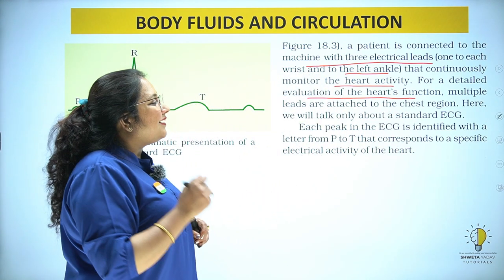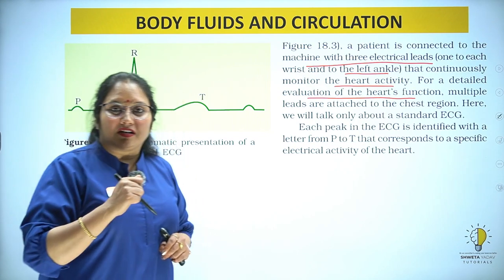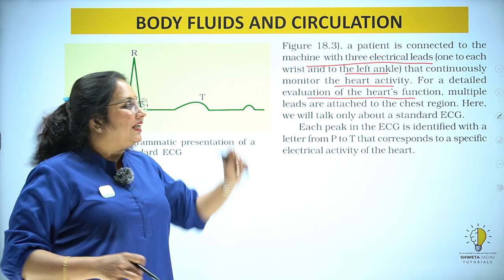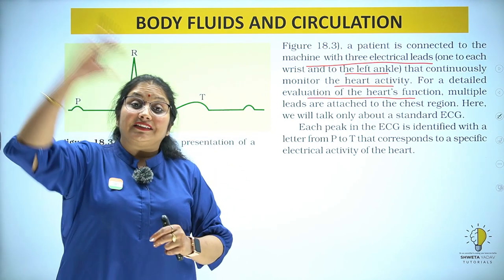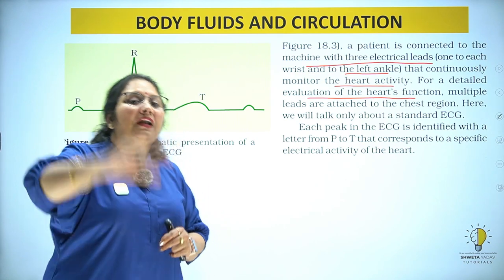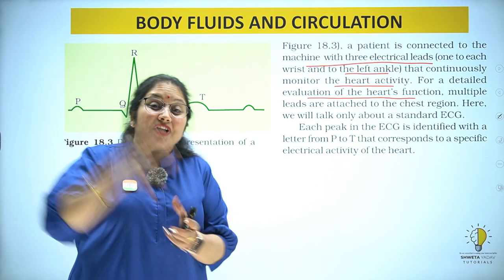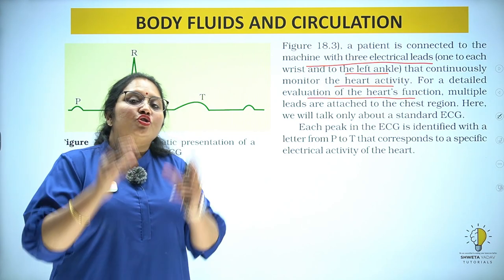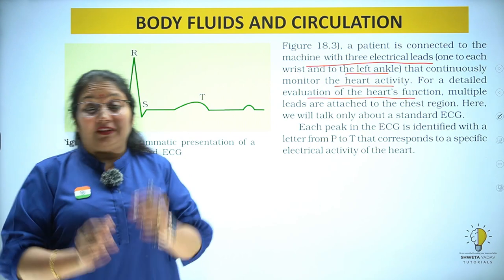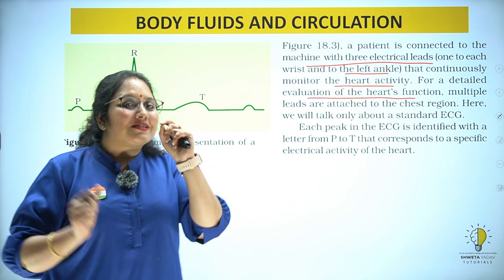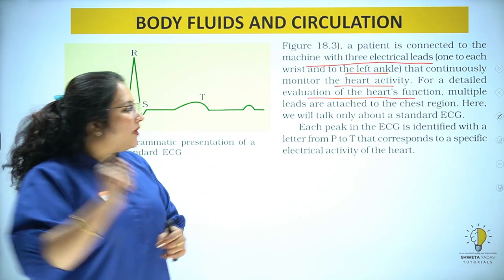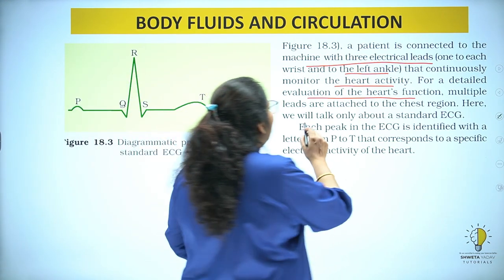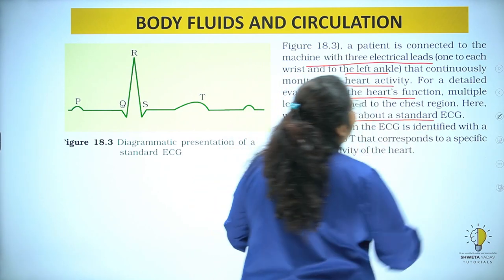For a detailed evaluation of heart function, multiple leads are attached to the chest region. One on each arm and one on the left leg, that is the ankle. Along with that, multiple leads are attached to the chest. Those attached to the chest are called chest leads, and those attached to the arms and legs are called limb leads, recording all the heart's electrical activity.